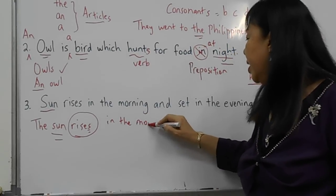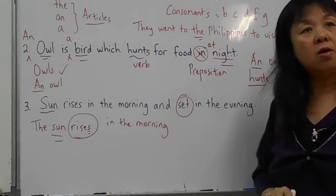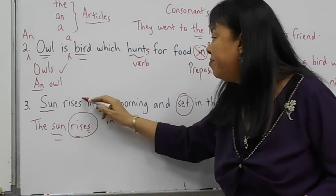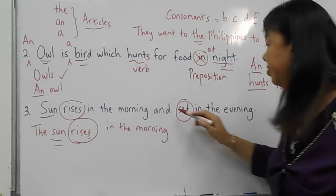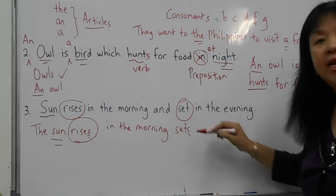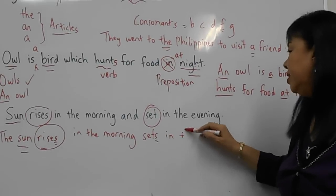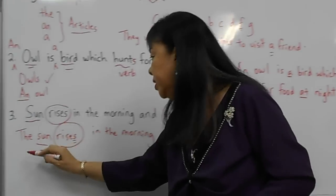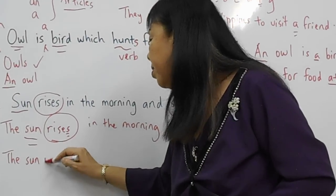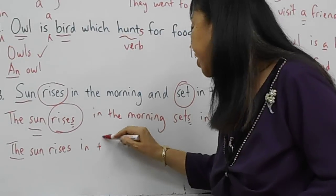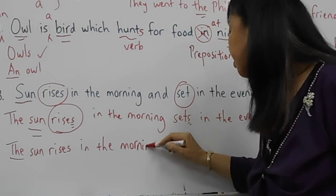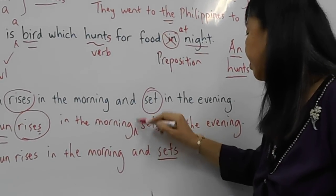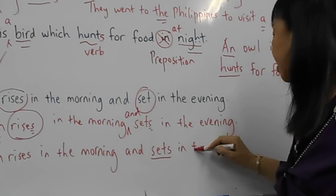Since the subject is 'the sun' — one sun — 'rises' takes an 's,' and this should also be followed by 'sets' with an 's' in the evening. The correct sentence is: 'The sun rises in the morning and sets in the evening.'